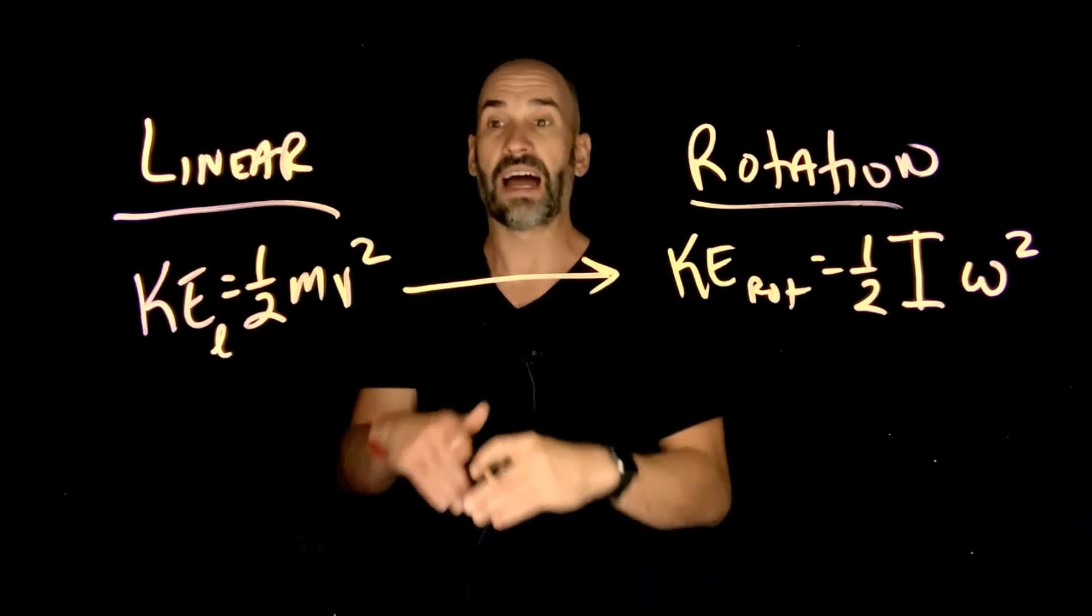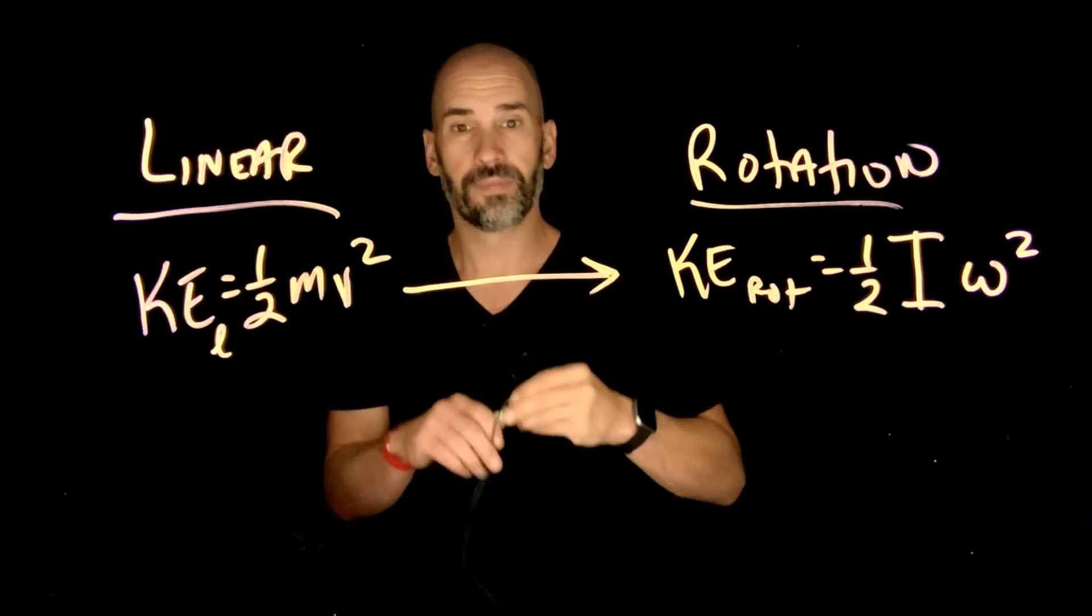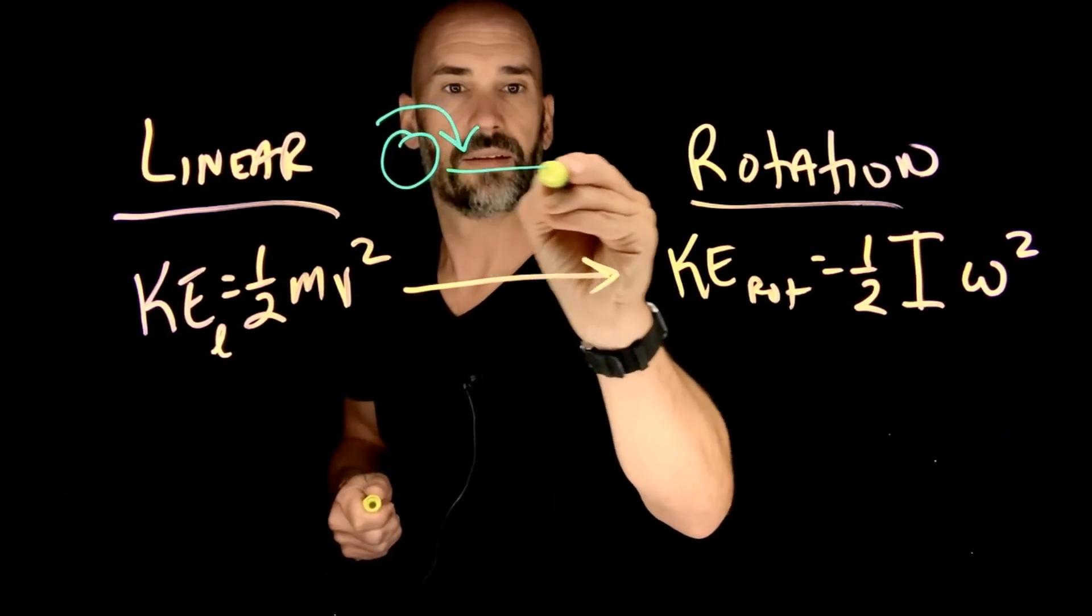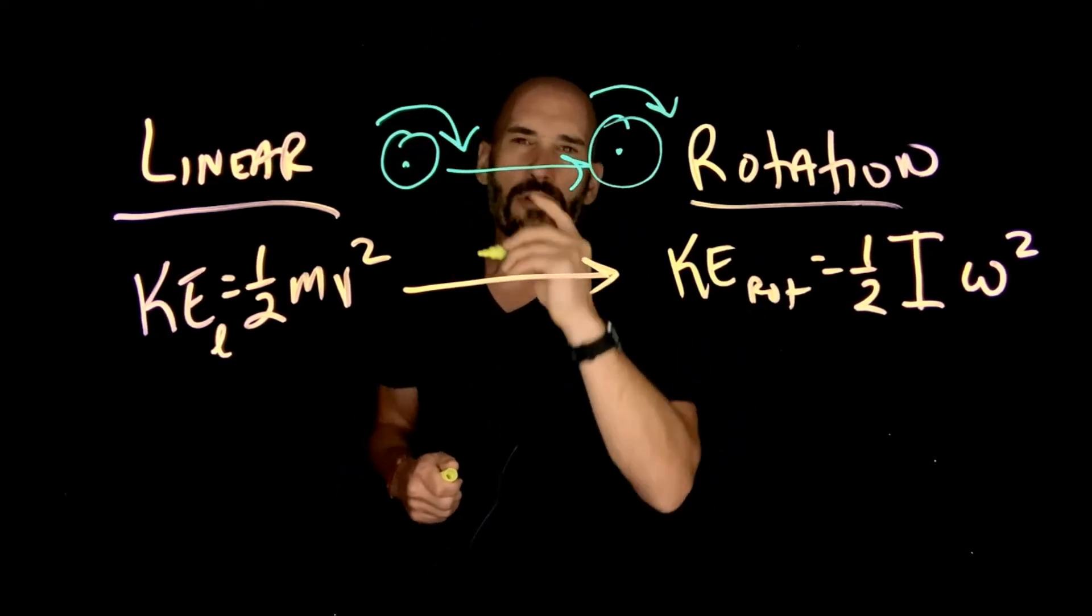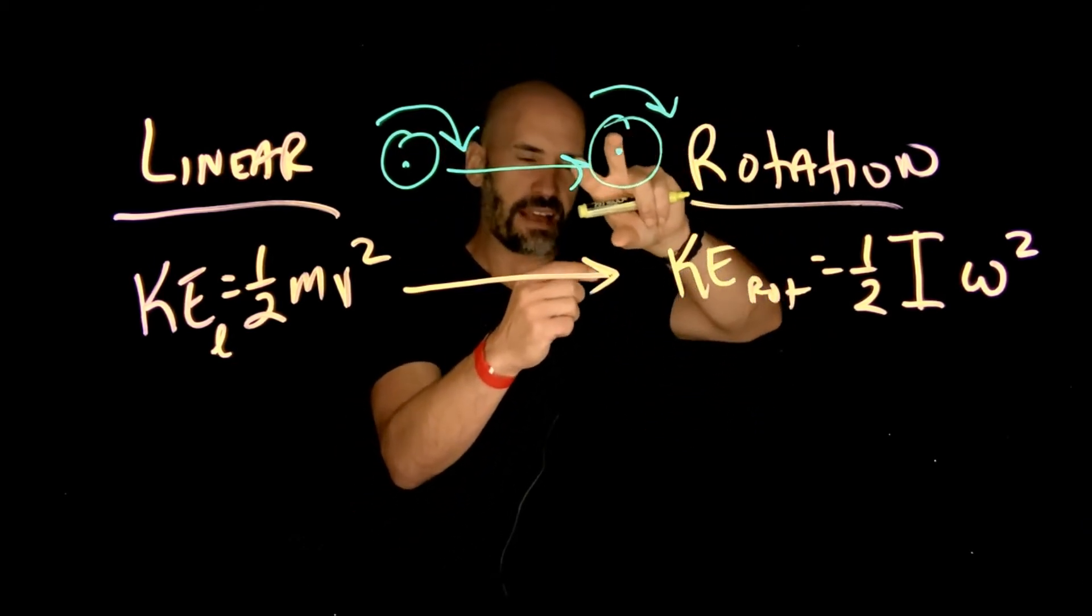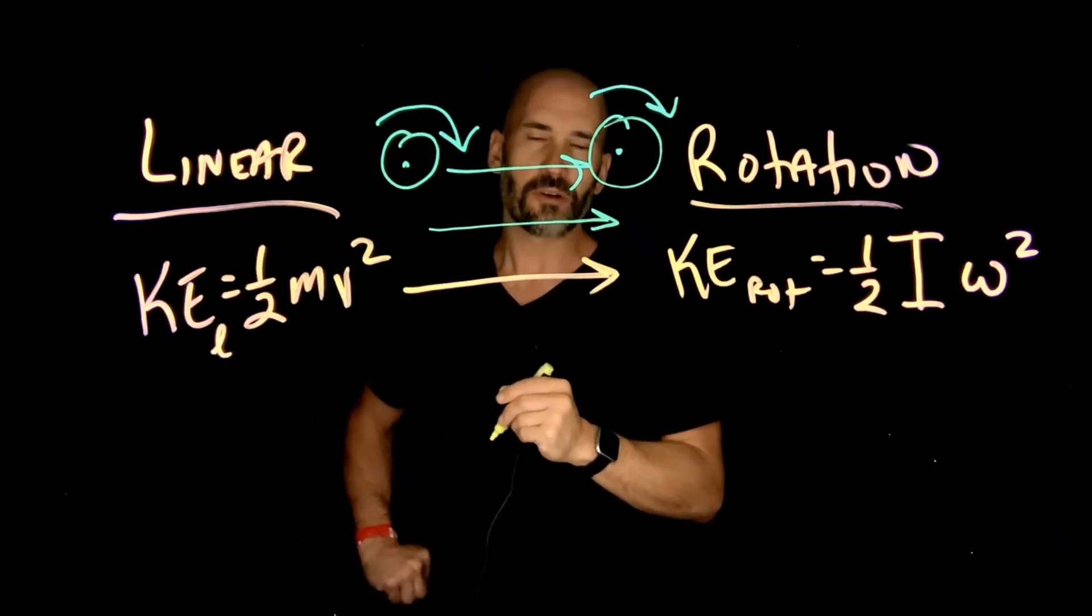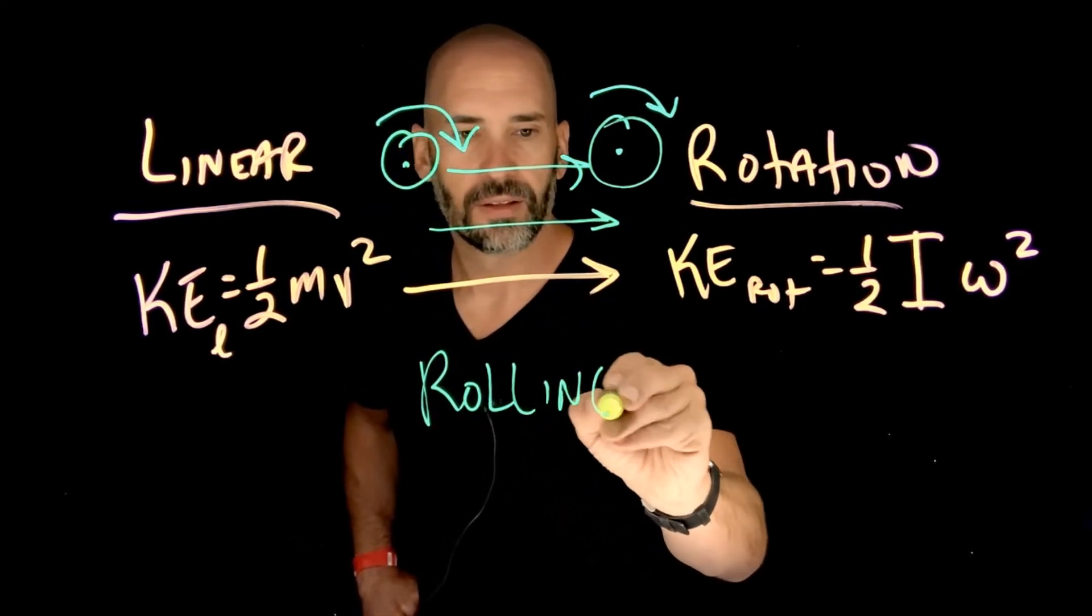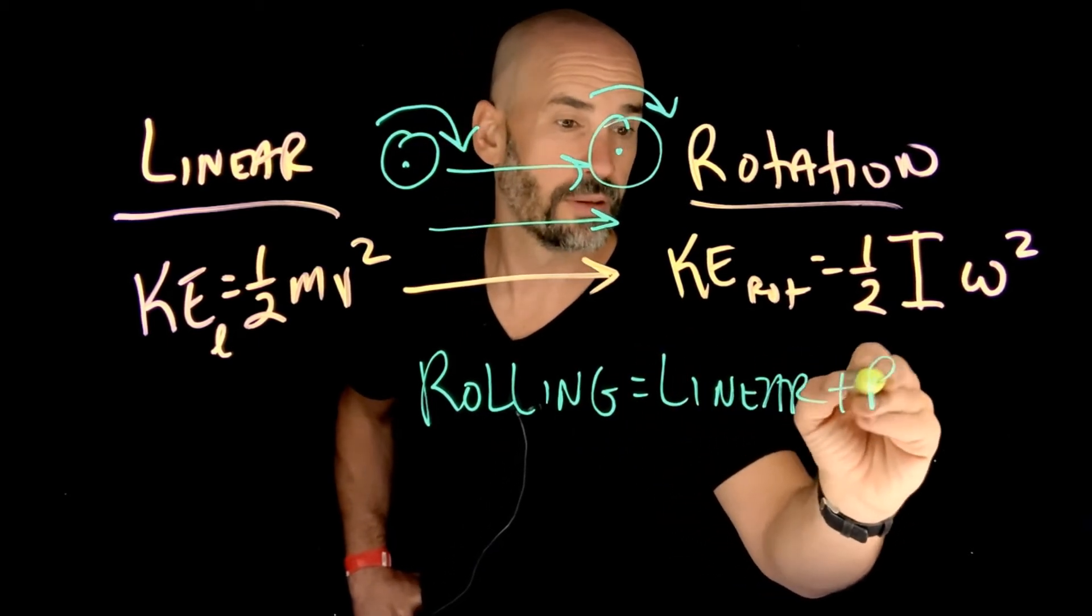And this brings me to this whole concept of rolling. Imagine I have an object that's rolling. An object that's rolling - notice it's a mixture of rotation, it's spinning, and it's moving linearly at the same time. Kind of cool. So you can think of rolling, the case of rolling, as a mixture of linear plus rotational motion.